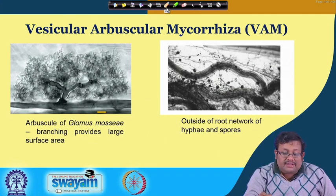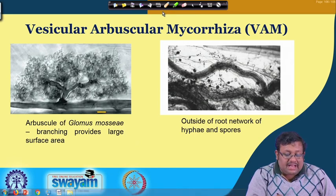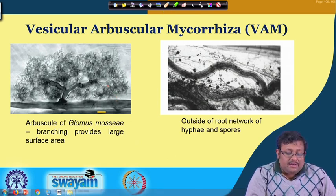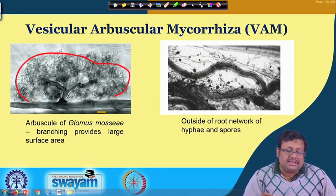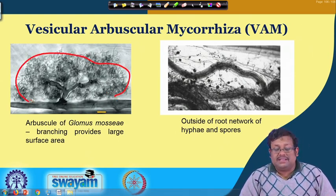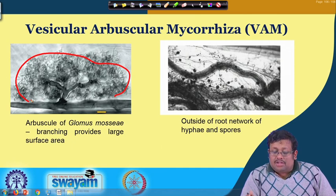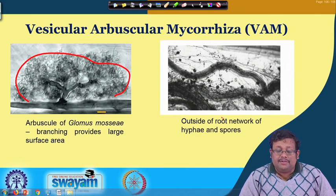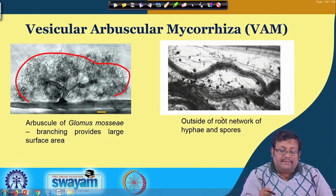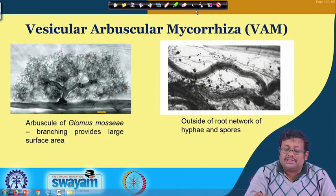Some photographs of VAM show arbuscules of Glomus species where extensive branching provides a large surface area through which nutrients can be exchanged. Also visible is the outside-root network of hyphae and spores — you can see how intricate a network can be developed in this mycorrhizal association.